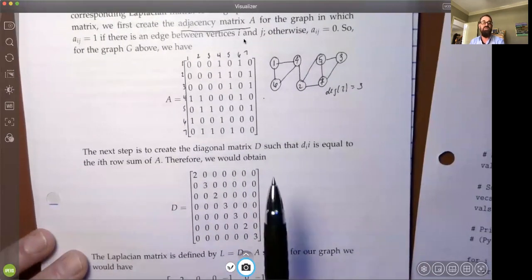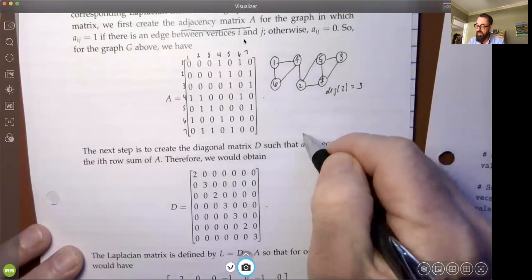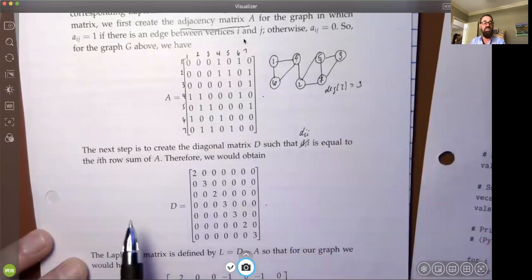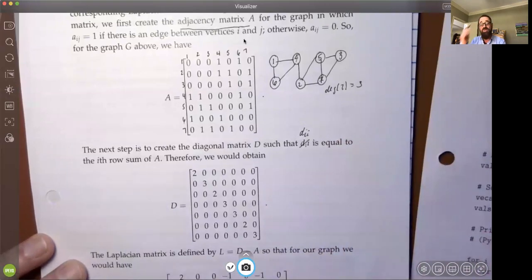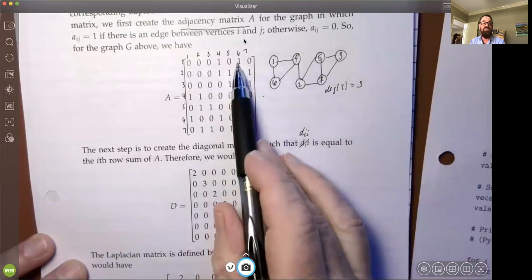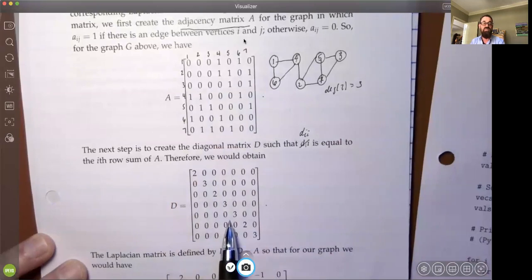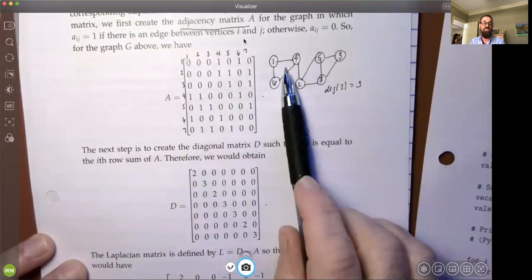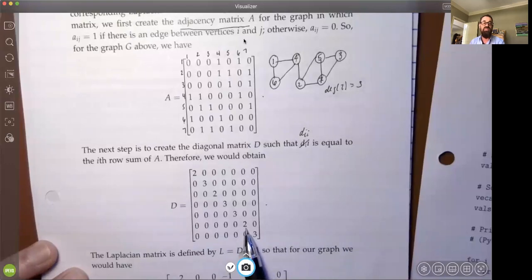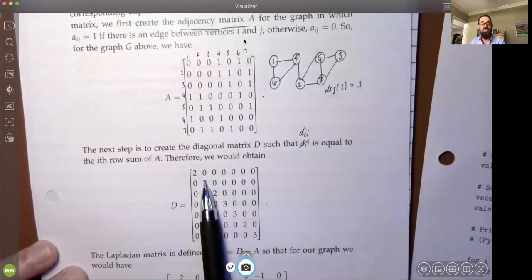The next step is to create what's called the diagonal matrix D, such that D_ii, the diagonal element, is equivalent to the i-th row sum of A. So what we do is go across here and count the number of ones. There are two on the first row, so we put a 2 in that diagonal position. Another way to look at it is these are the degrees of the vertices as you scan through all of those vertices in the graph. The degree of 7 is 3. The degree of 6 is 2, because there's only two edges coming out of 6. We can see that information coming down the diagonal.